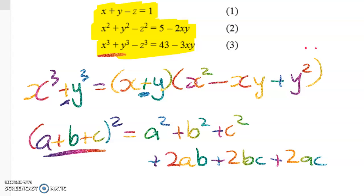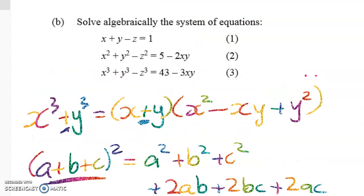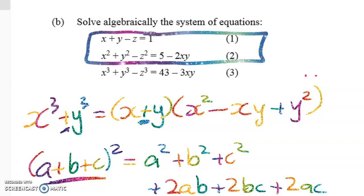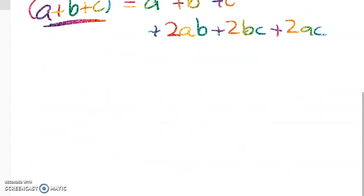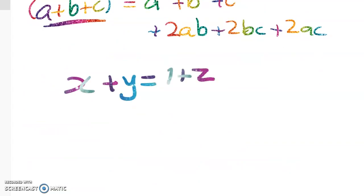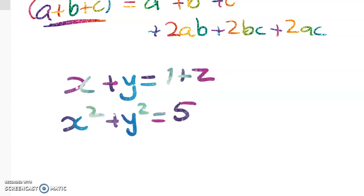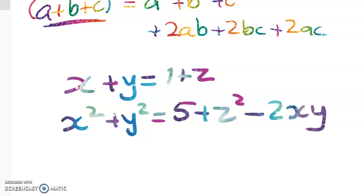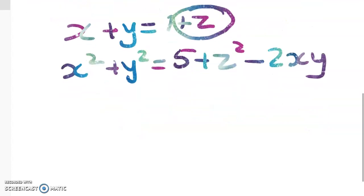Let's look at how we can start off if we don't see something obvious to do. We can try to reduce things down to two variables. Let's look at the top two equations and rewrite them with z on the other side. We get x + y = 1 + z, and then x² + y² = 5 + z² − 2xy. It's pretty easy to rewrite the first equation and eliminate z using substitution.